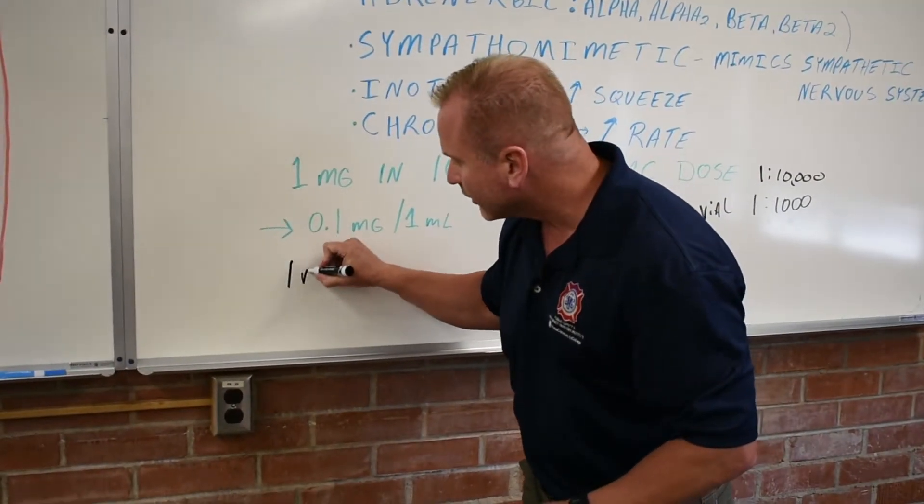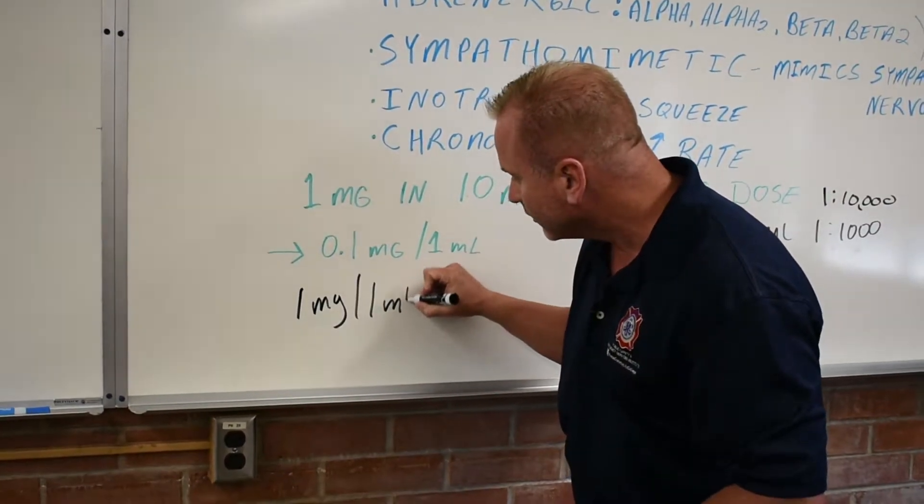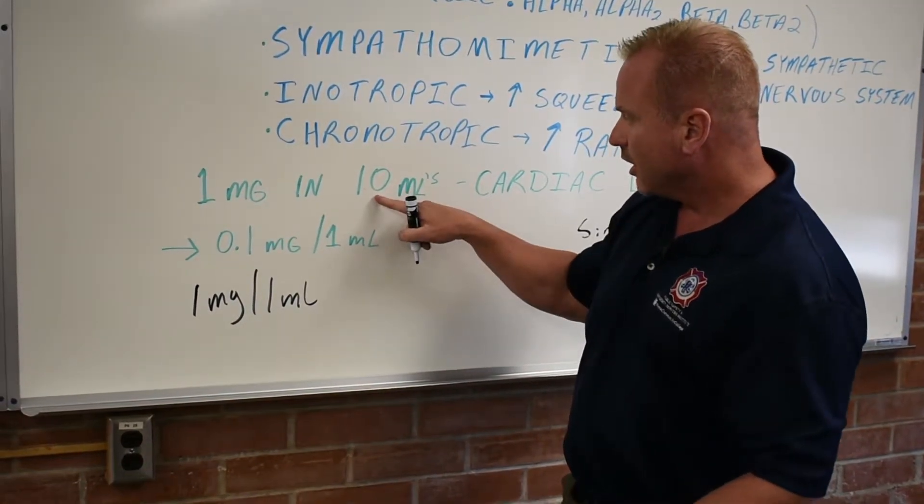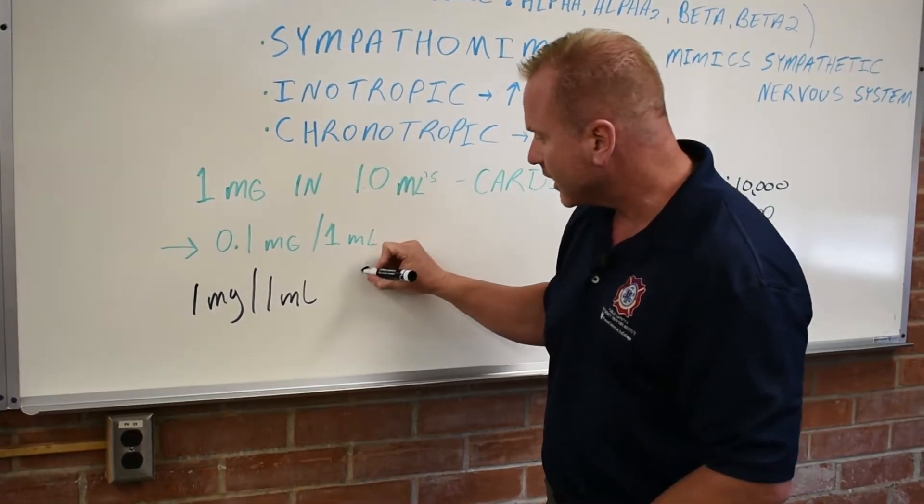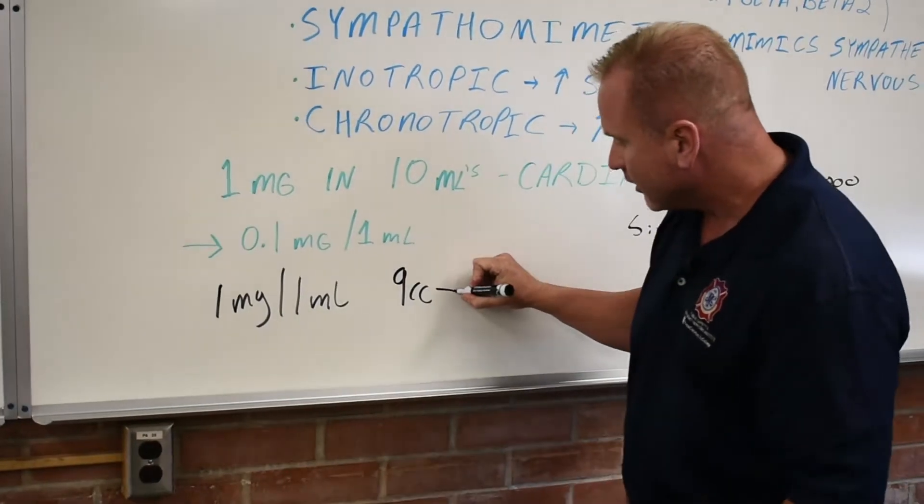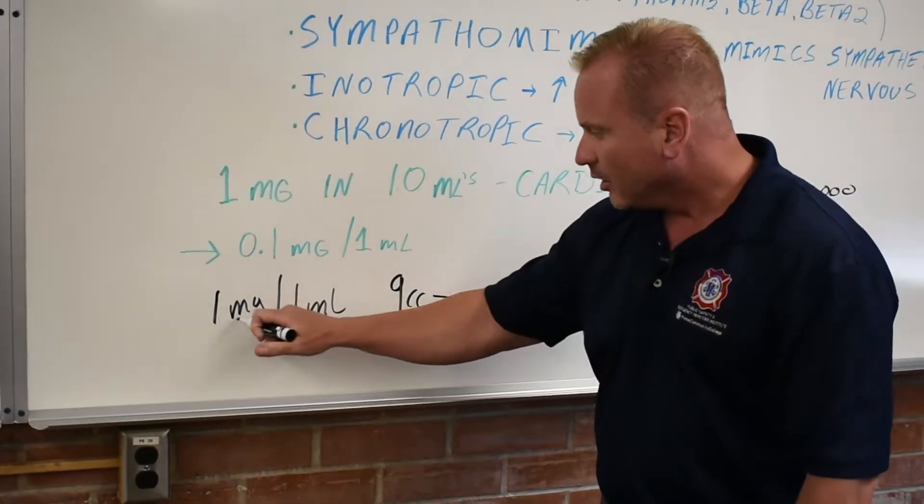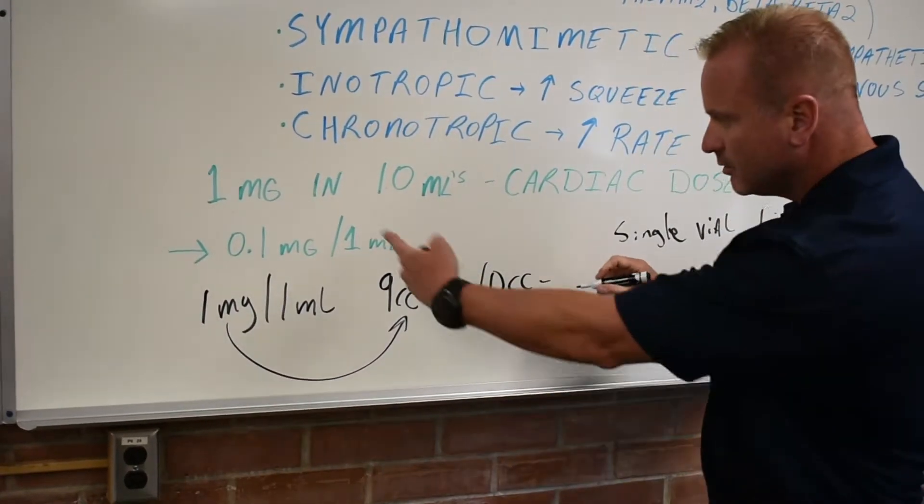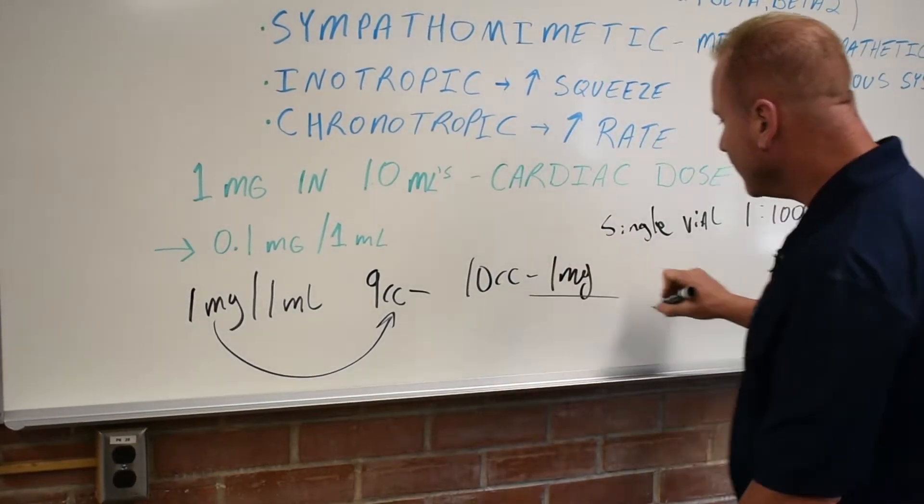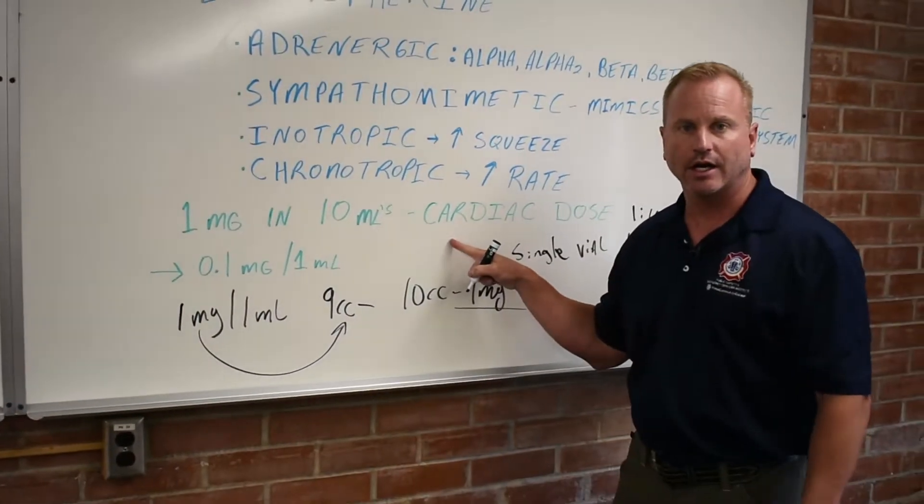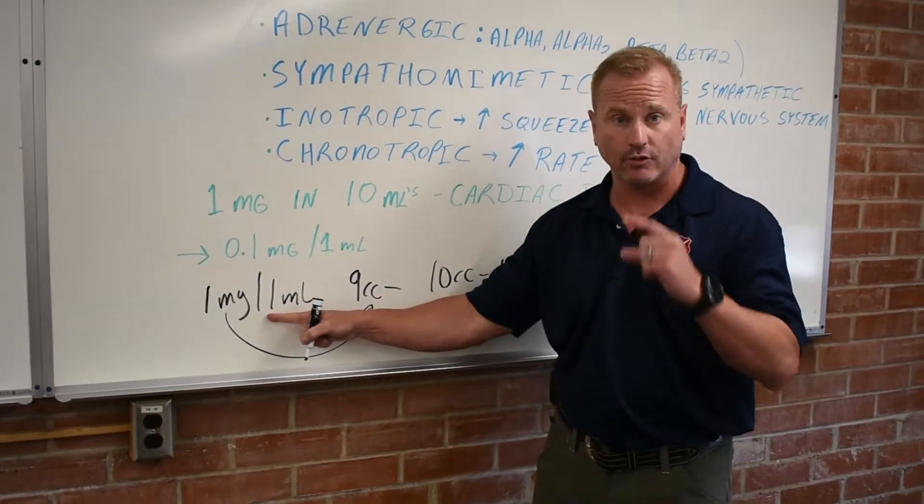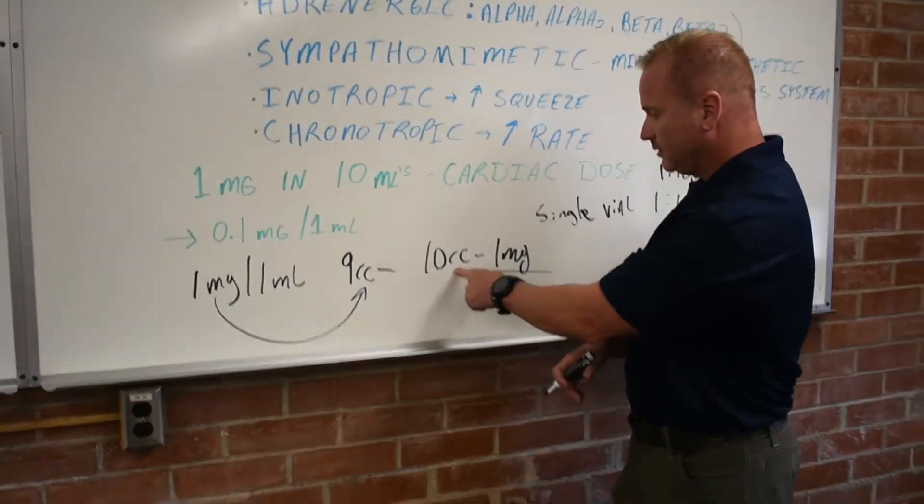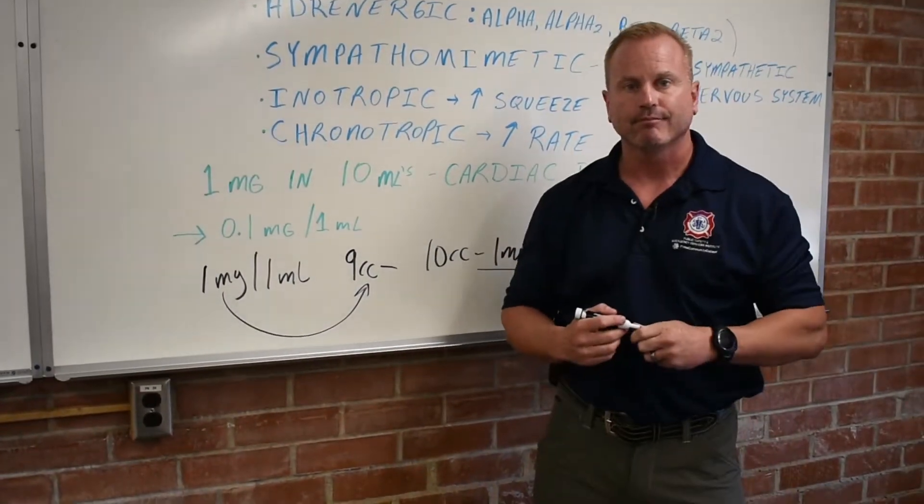Could we make cardiac dose epi out of 1 to 1,000? Sure. It's 1 milligram per 1 ml. Well, what can I do? I can take my 10 cc syringe. I can shoot out 1 ml. So now I have 9 cc's of saline. And I just add my 1 ml to that. So now I have 10 cc's. I still have 1 milligram. That is no different than the cardiac dose. You've just taken a concentrated formula and diluted it out into 10 ml. It's all the same.